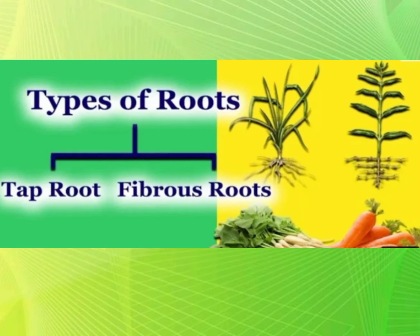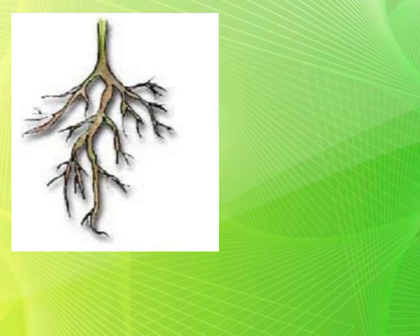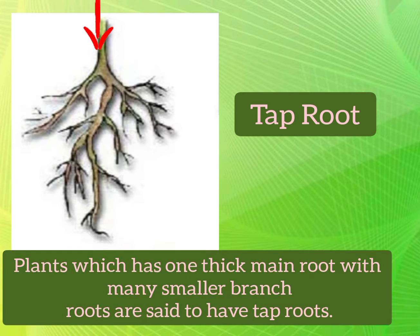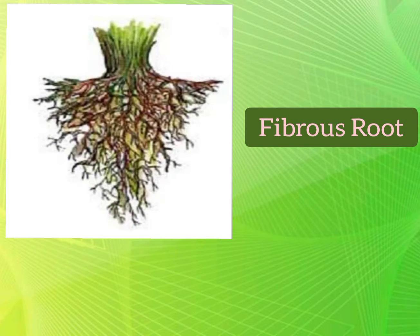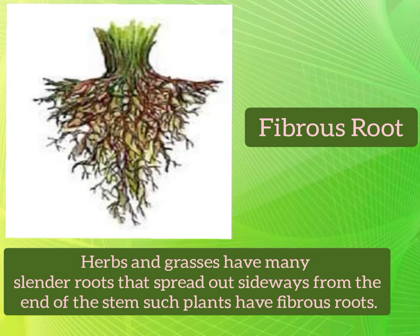Now we will know about the two kinds of roots. The first one is tap roots and the second one is fibrous roots. Plants which have one thick main root with many smaller branch roots are said to have tap root. Herbs and grasses have many slender roots that spread out sideways from the end of the stem — such plants have fibrous roots.